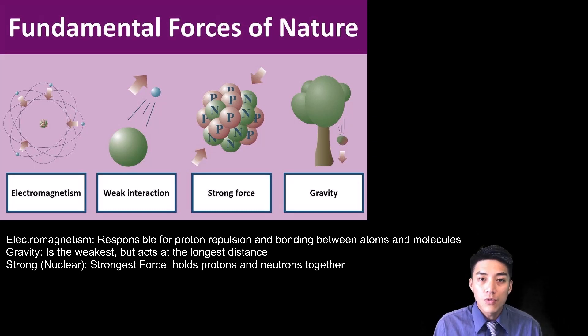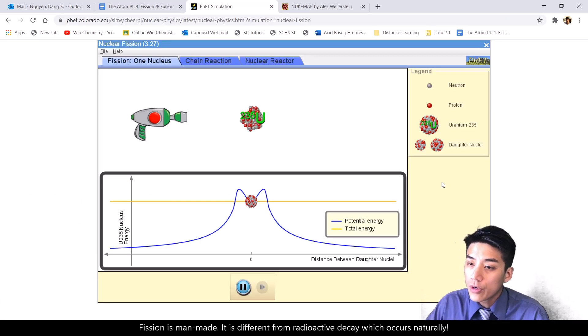The basis for nuclear weapons relies on the strong force. If you can split an atom's nucleus, you're releasing the strong force and a large amount of energy with it. It took four years for the Manhattan Project to figure out fission.